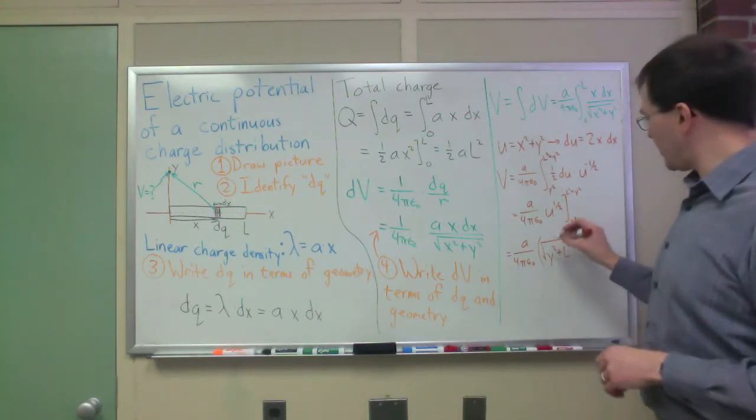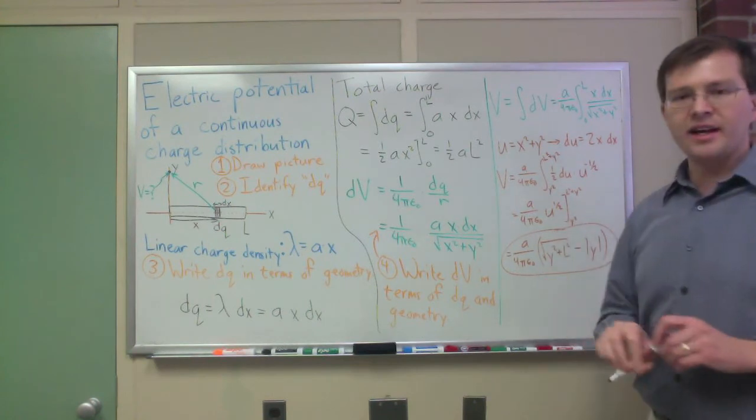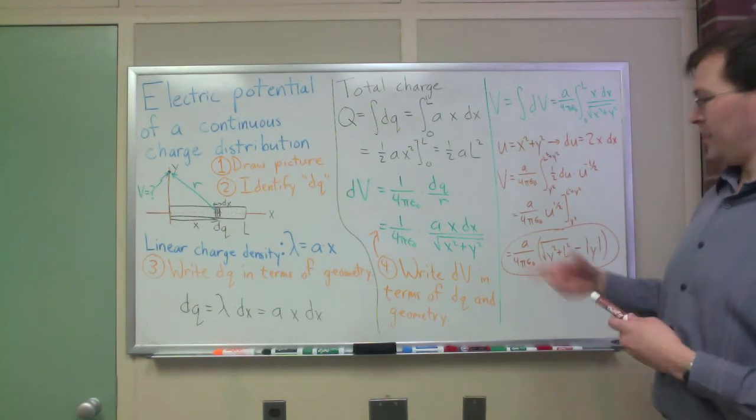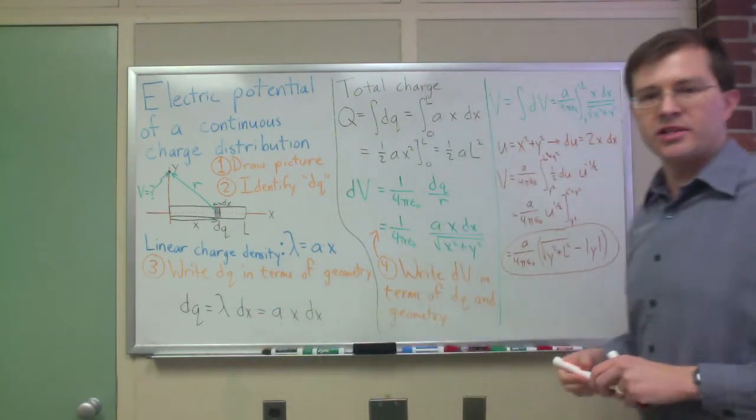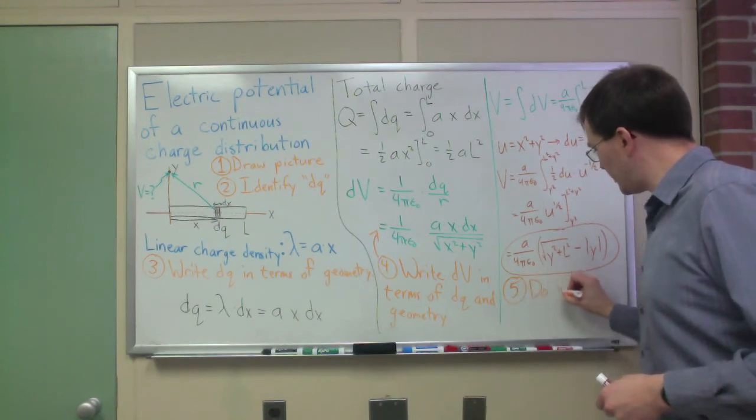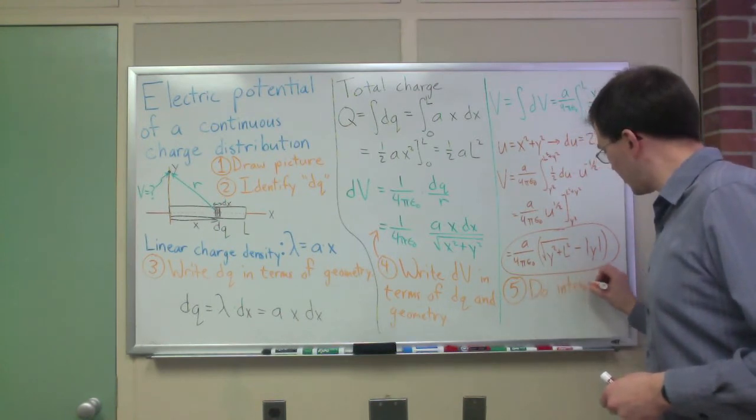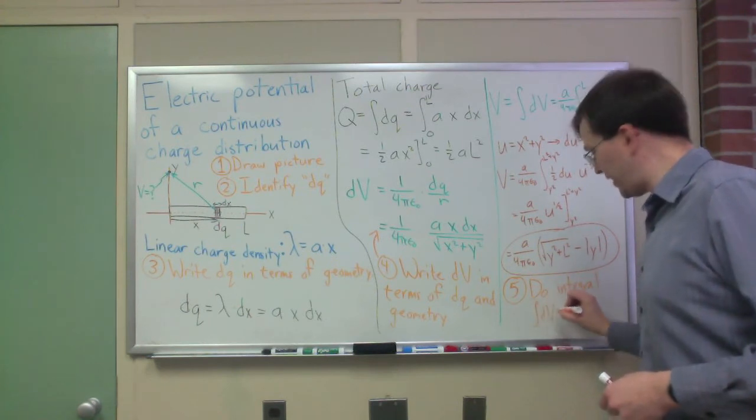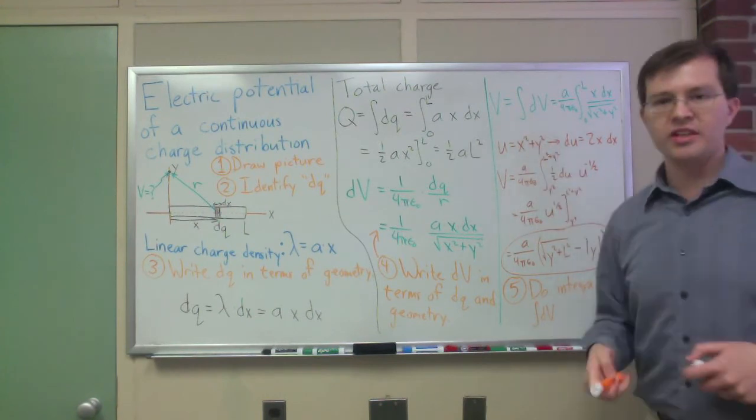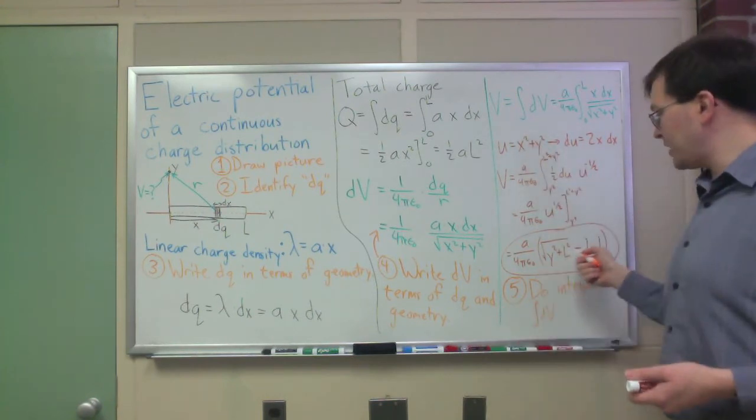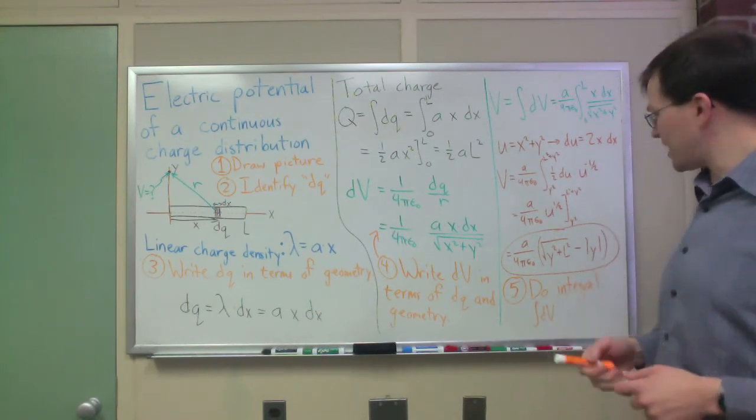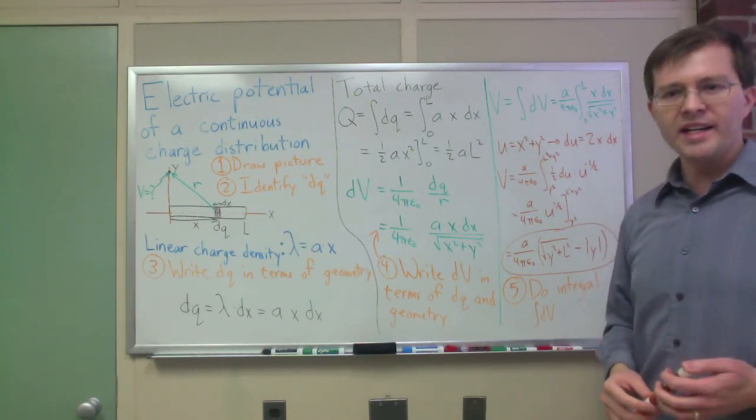So that's comforting. It shouldn't matter in this picture whether we're above or below the end for electric potential. Electric potential doesn't depend on which side you're on, it's just about distance. So this is actually a comforting result. I have answered my question right there. Step 5 here was do the integral dv. But then I find my V and I'm all set.